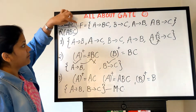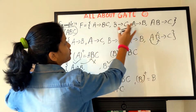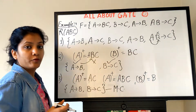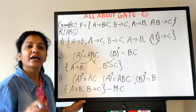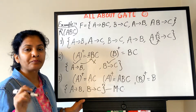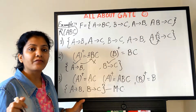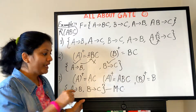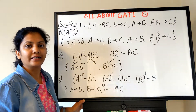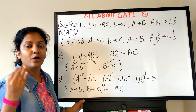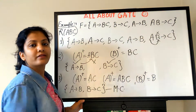We started from a functional dependency set with 4 FDs, some with multiple attributes on each side, and we have reduced it to just A→B and B→C. This makes it much easier to check for violations when updates are performed, compared to checking all the original dependencies.